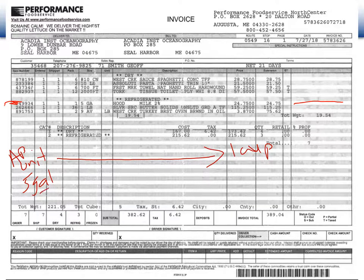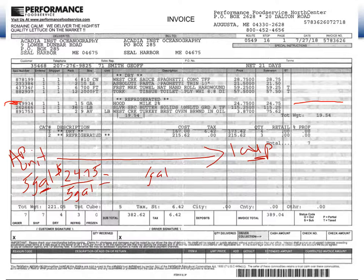Do our units match — gallon and cup? They do not match right now. So we have to start with how much does our milk cost us: $24.95, divided by five gallons, that gives us our cost per gallon. Hey Siri: what is $24.75 divided by five? That gives us $4.95 per gallon. Do my units match? No, I'm still gallons versus cups.